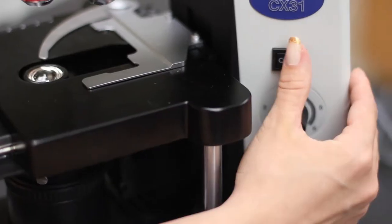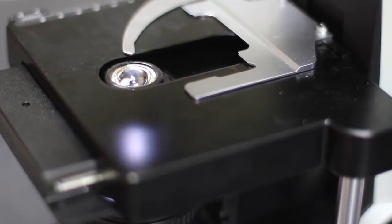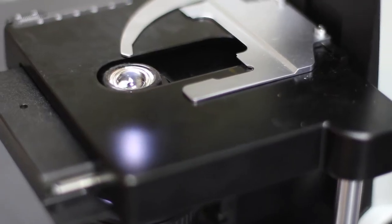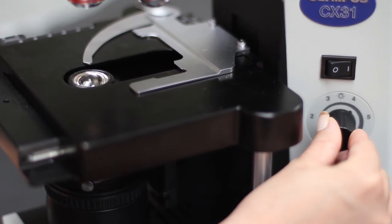Next, turn on the main power switch. You should see the light come on. If you do not see the light, check the light intensity knob. It should be set in the middle of the range.